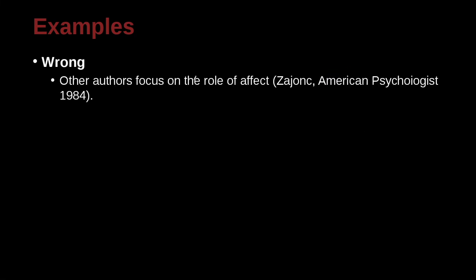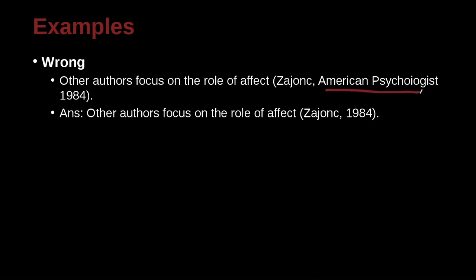Other authors focus on the role of affect. Here you can see there's a comma and then a journal name. However, in APA we don't need a journal name — we just need the author, comma, year. Pay attention to that: before the comma, no space; after the comma, one space. Then the year of publication, 1984. That's all you need.